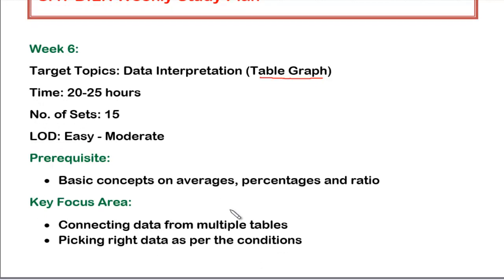Many a time the sets from data interpretation, that is from table graph, will have multiple tables. So some data will be given in say table A and some data will be given in say table B. So you have to read the data and as per the condition you have to make connection in the data which is given in table A and how it is connected to table B. Such thing is very frequently used in table graph. So this is the thing which you have to learn.